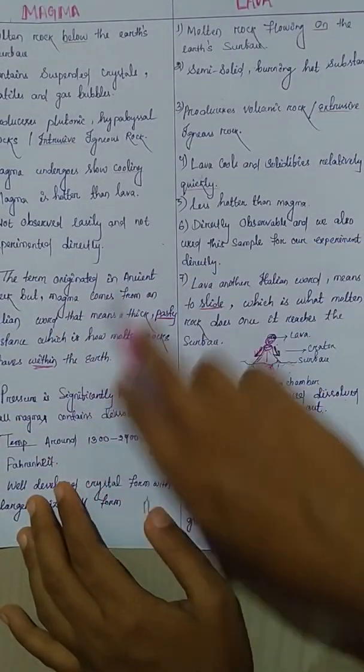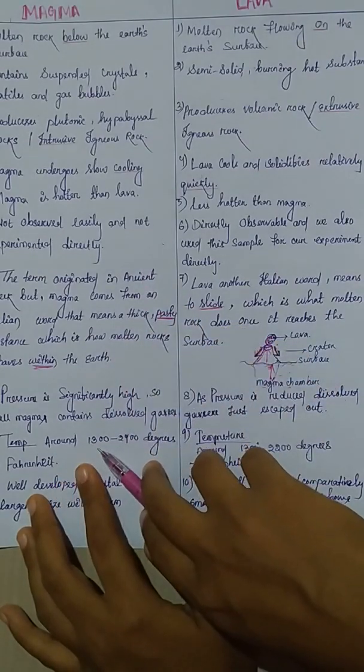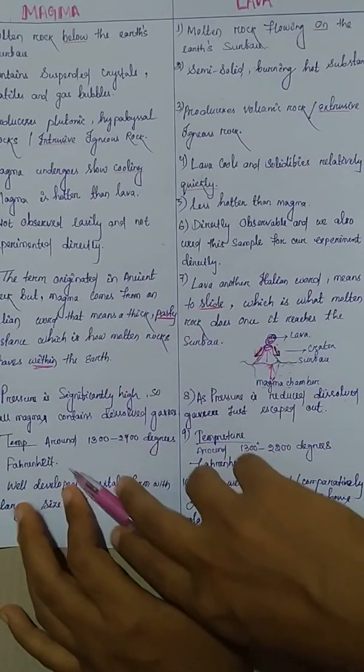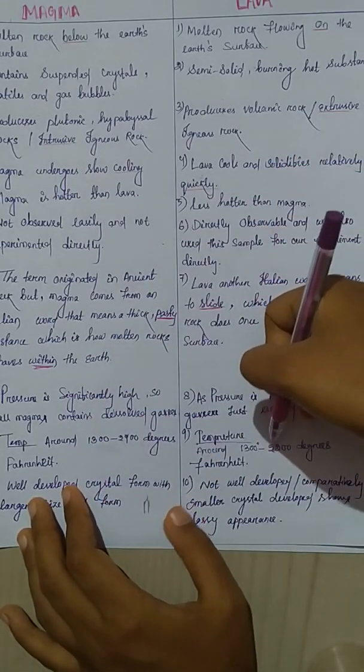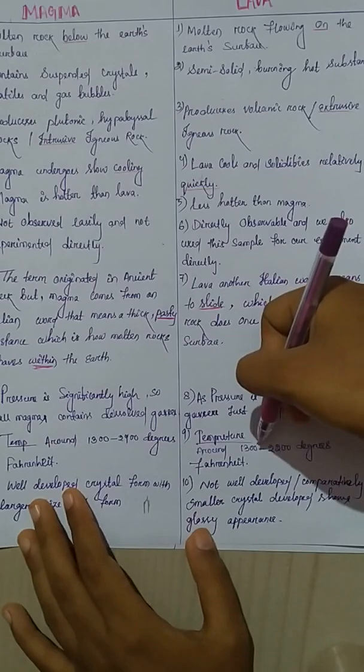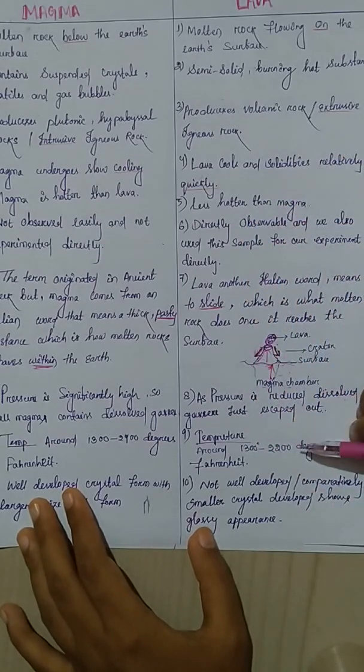What is the temperature of magma? It is around 1300 to 2400 degrees Fahrenheit scale. In case of lava, it is relatively lower, that is 1300 to 2200 degrees Fahrenheit.